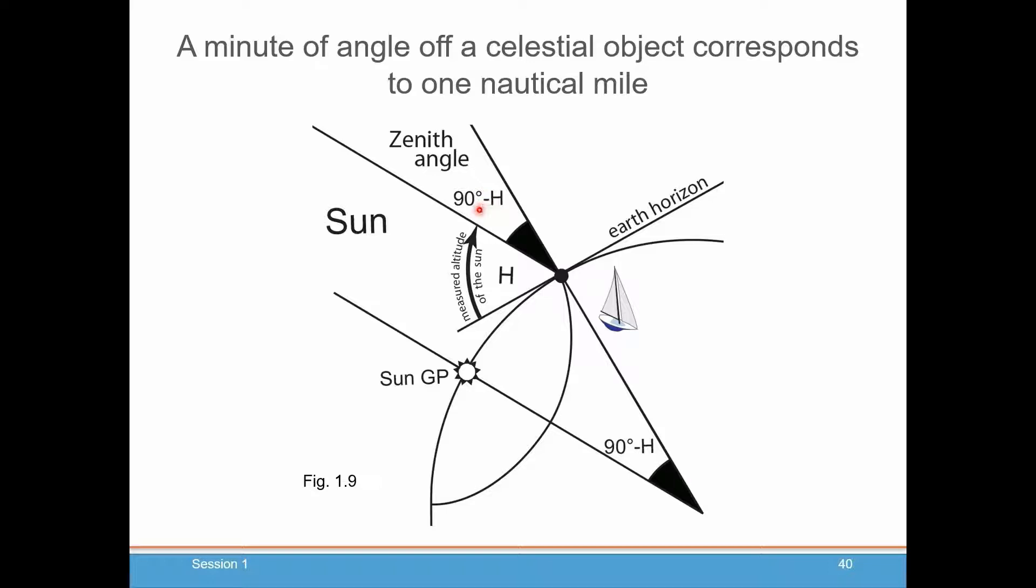Associated with that is something we call the zenith angle, which is 90 minus that height or that altitude. And it turns out that that zenith angle from the zenith to where the sun is, or whatever body you're measuring, is the exact same angle as this angle at the center of the Earth, between that GP and the location of your boat. That's important because this angle tells you how far away you are. One minute of angle is one nautical mile. One degree of angle is 60 nautical miles. So once you know this angle from your zenith angle, you know how far away you are, and that tells you the radius of this circle of position.